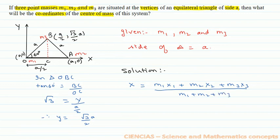So what we have: x equals (m1·0 + m2·a + m3·a/2) divided by (m1 + m2 + m3). This simplifies to x = a(2m2 + m3) / [2(m1 + m2 + m3)].